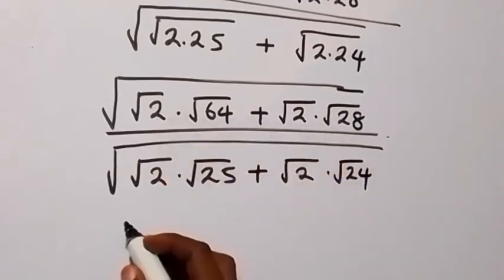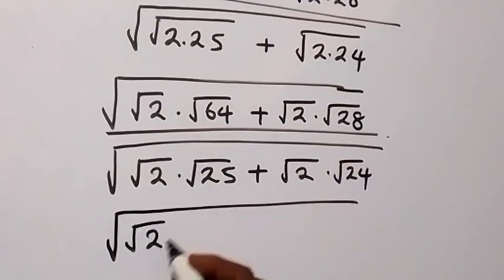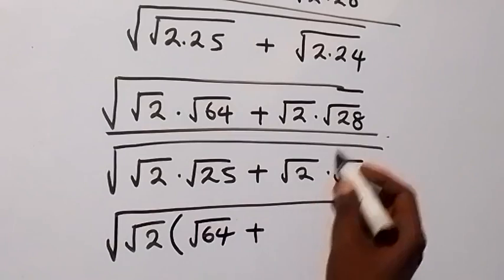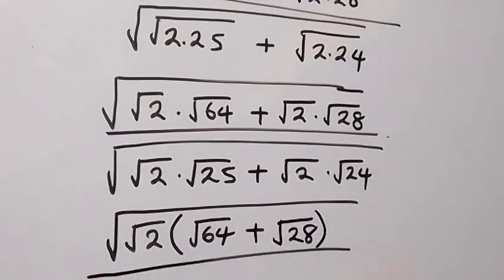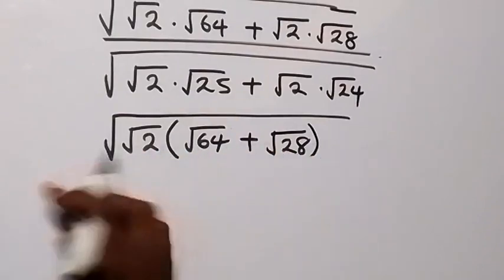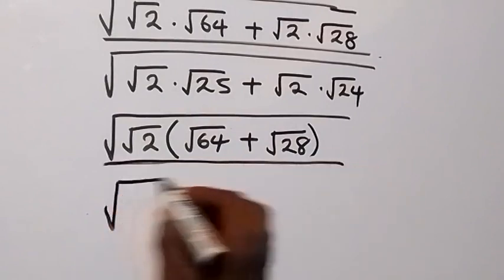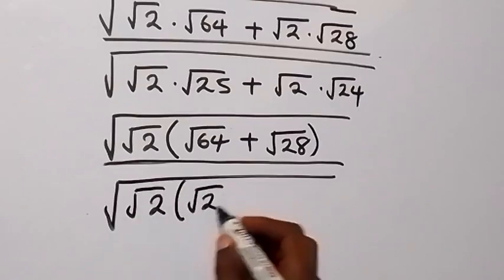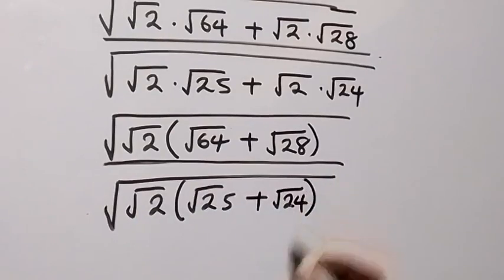Here we have root 2 common in the numerator, and from there we have square root of root 2 into bracket — what is left here we have root 64 then plus root 28 — then divided by. From the denominator here as well we also have root 2 common there, and when we factor that out we have square root of root 2 into bracket root 25 plus root 24, then close bracket.